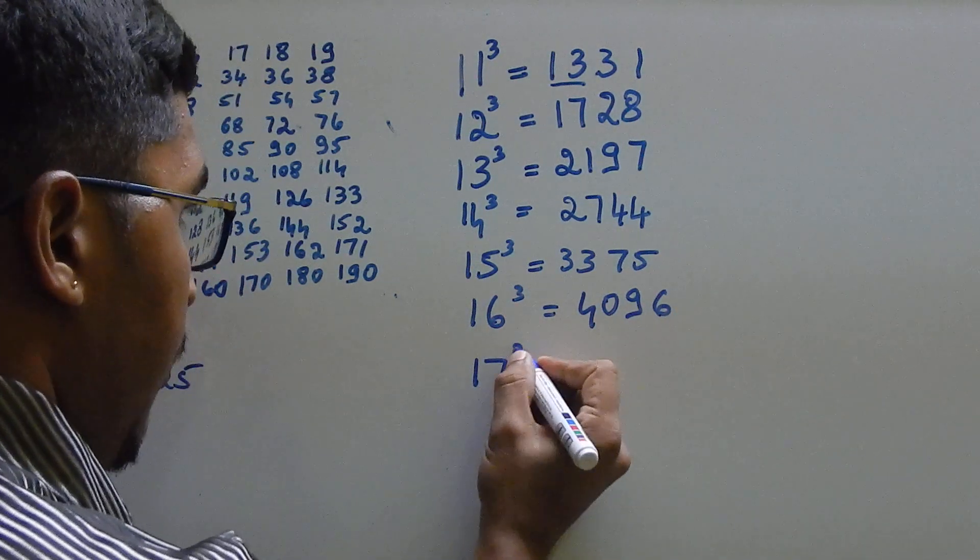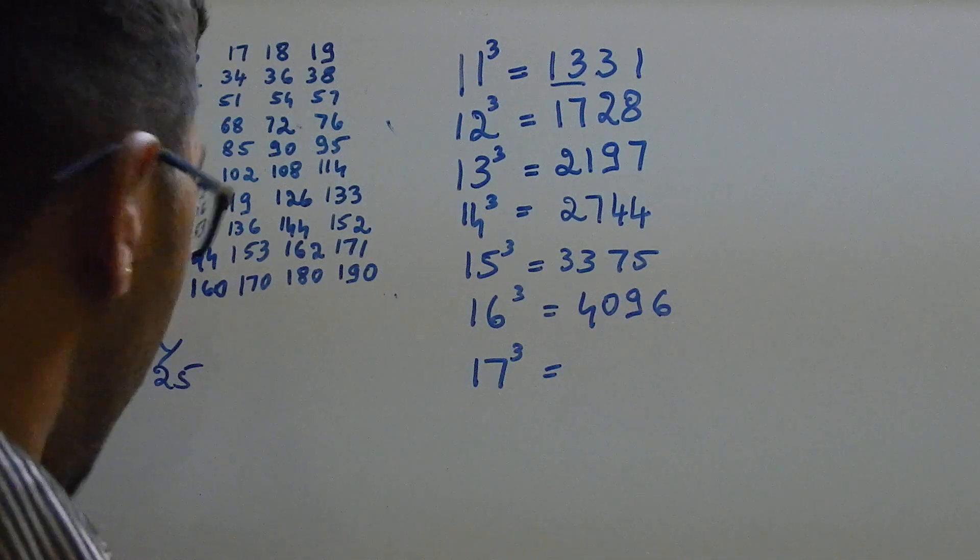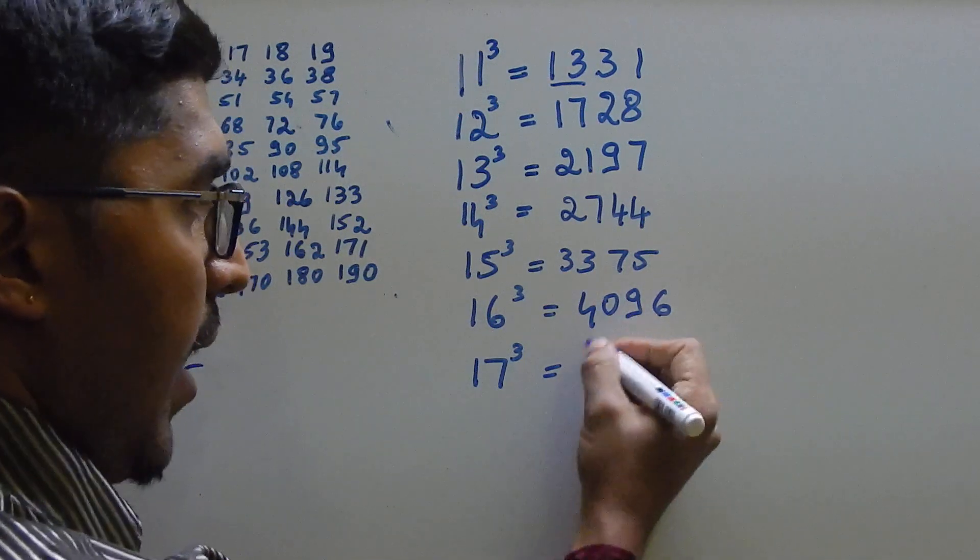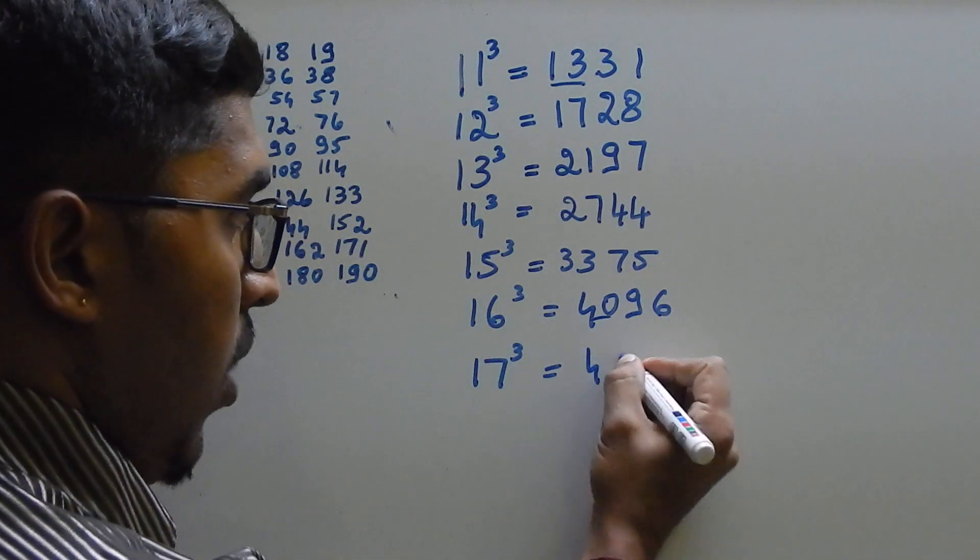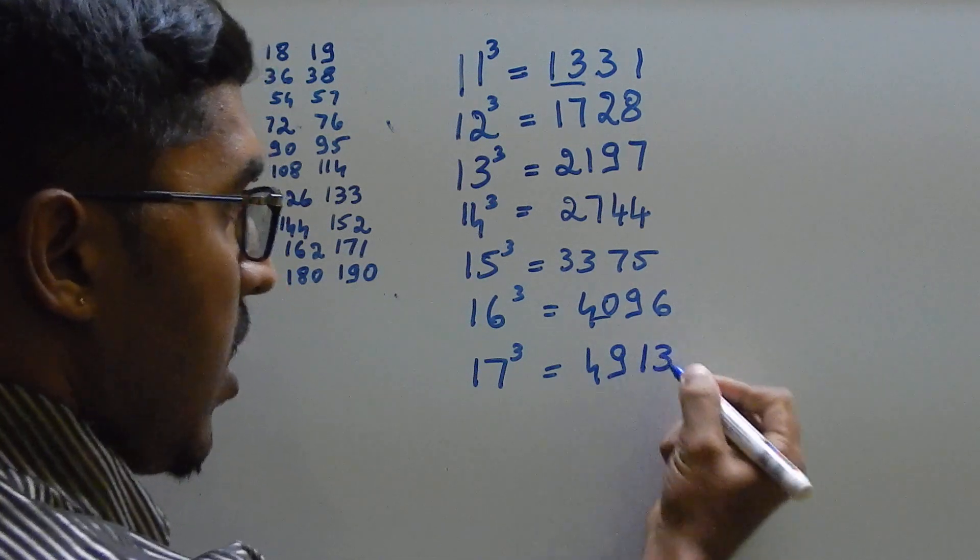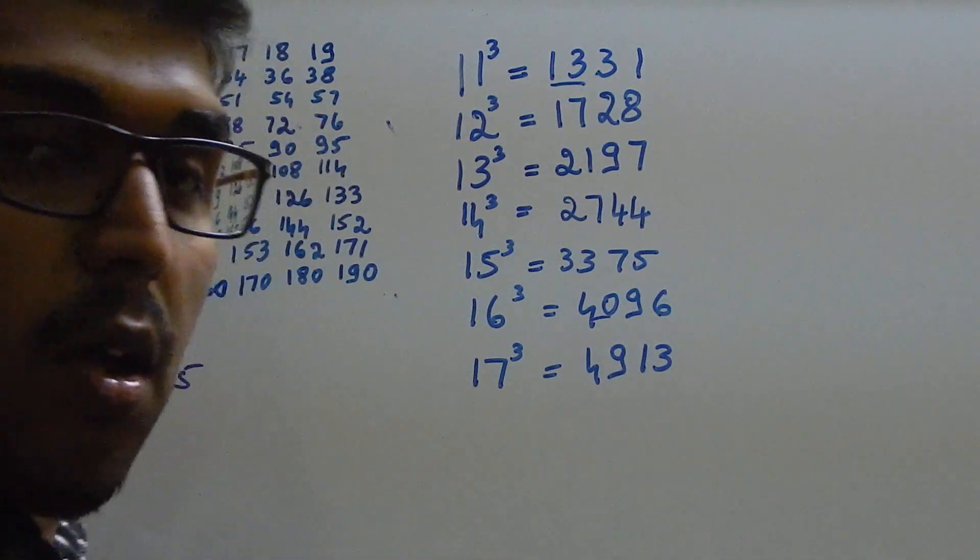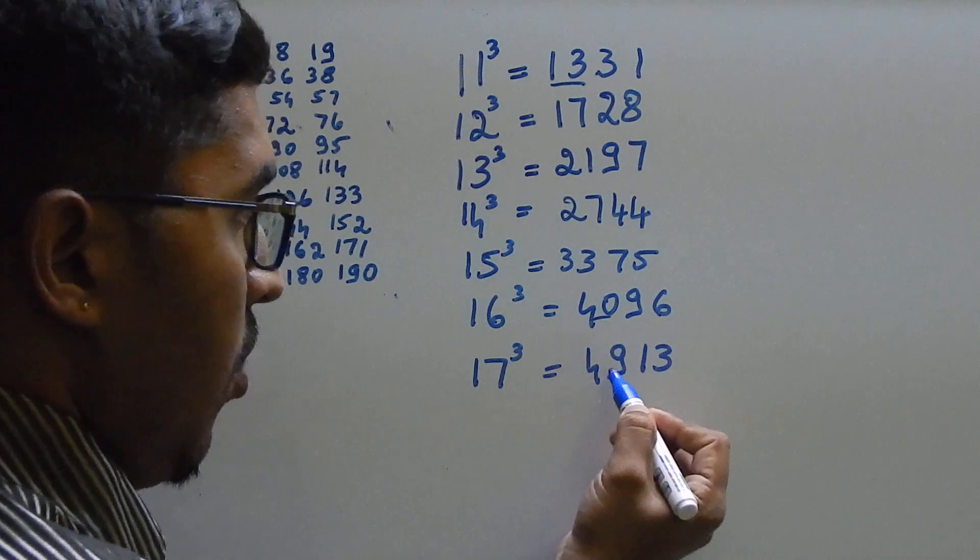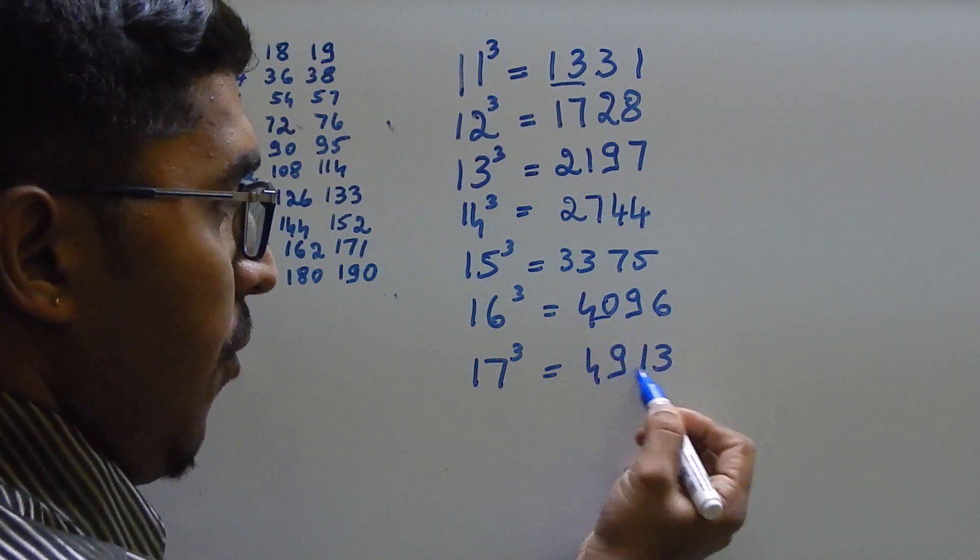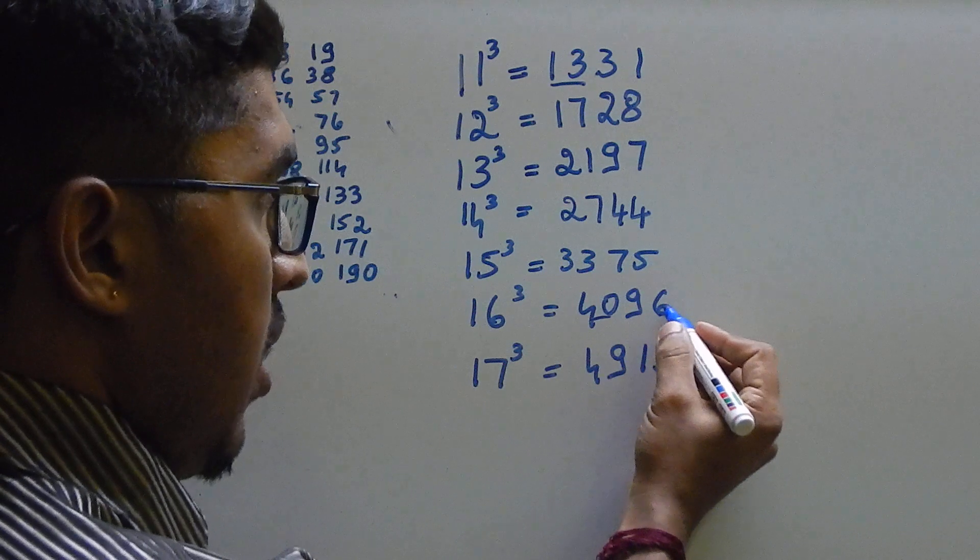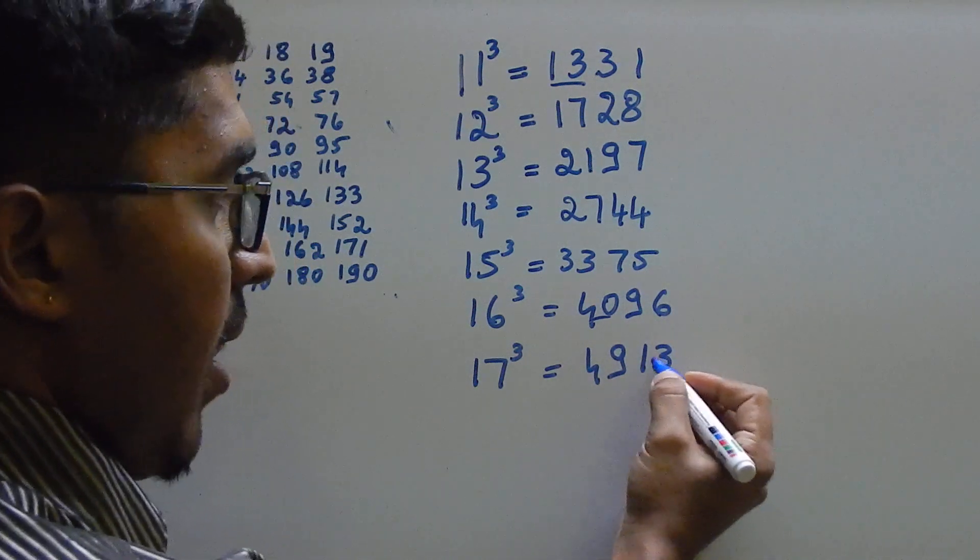17 cube. How will you write it? 4913. Add 9 to 40. 4913. There is no perfect logic. You just have to use your own technique. See, adding 9 to 40, you get 49. Then, double of 6, some 13.